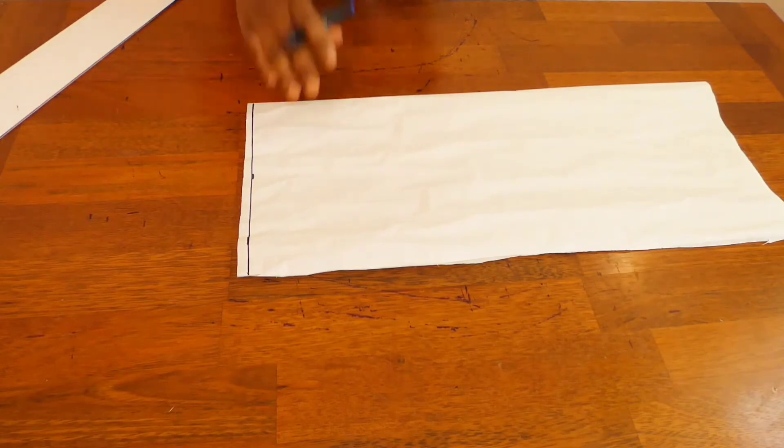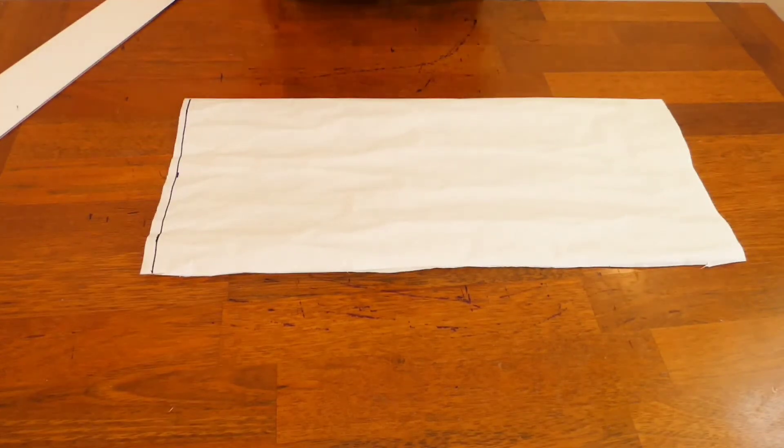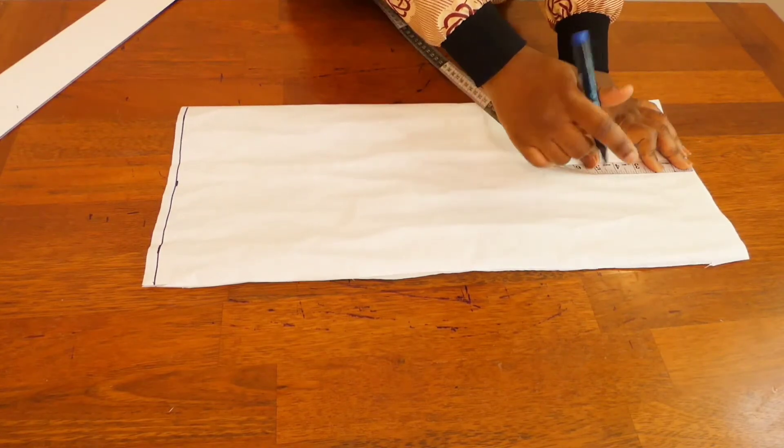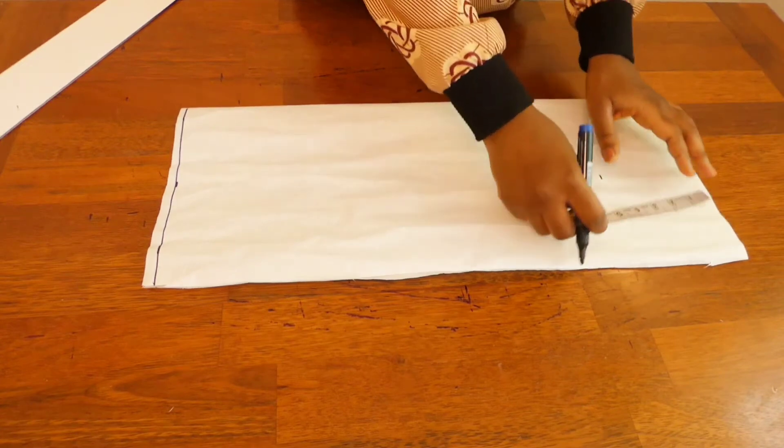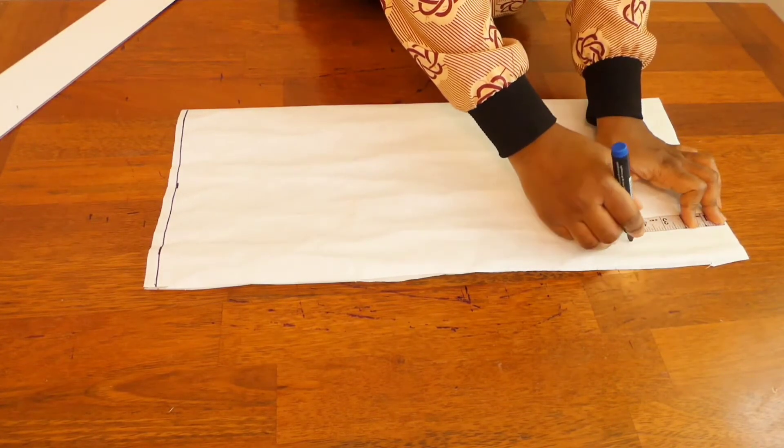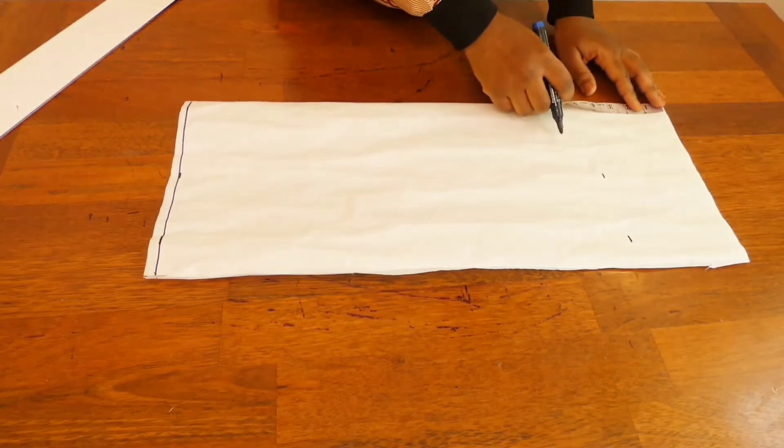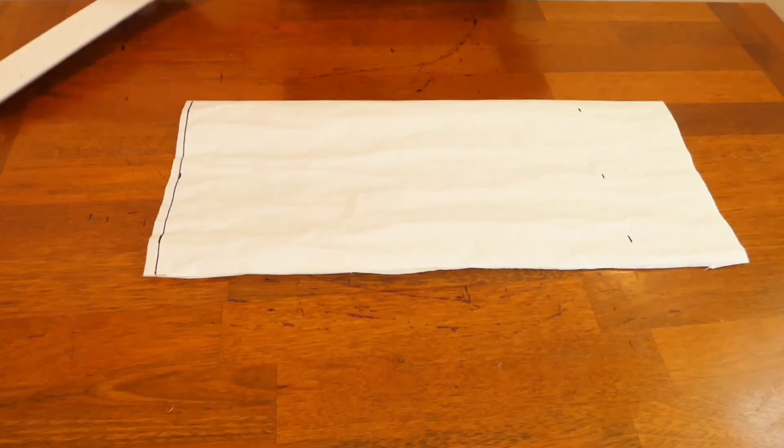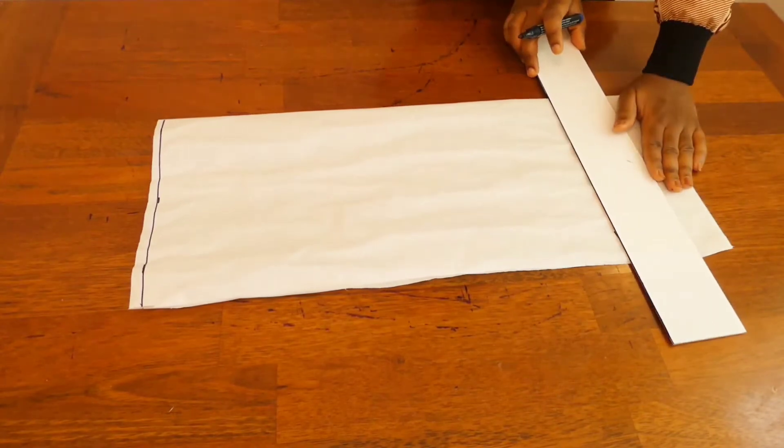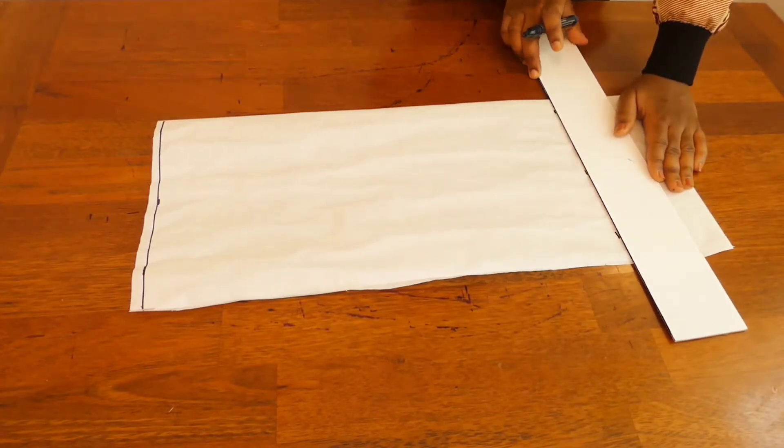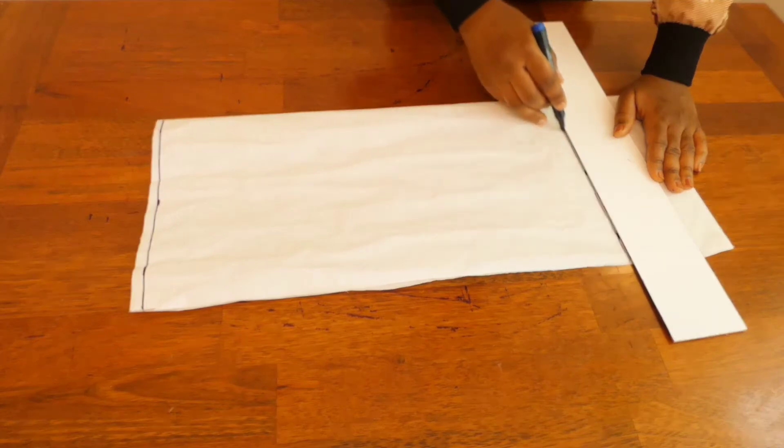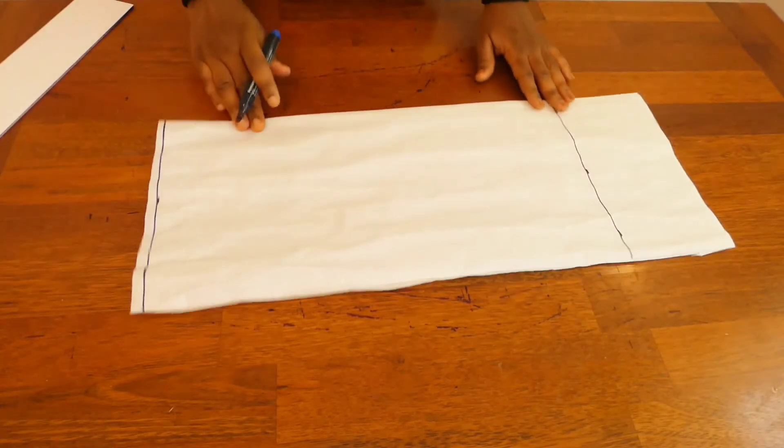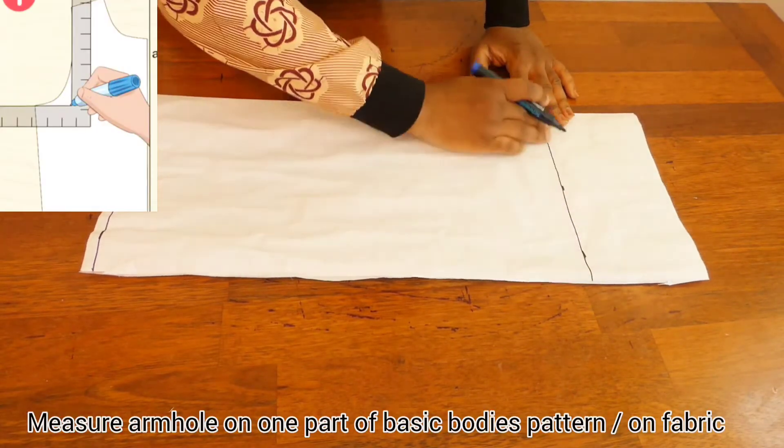So this is the full length. The next thing we are going to be marking, we're going to mark five inches from the tip, five inches. This is going to be the major line for the armhole.